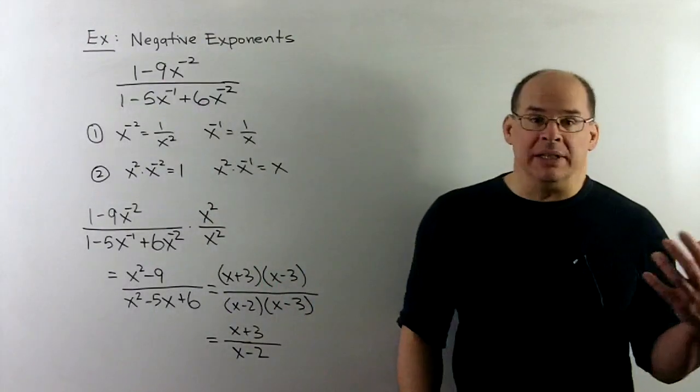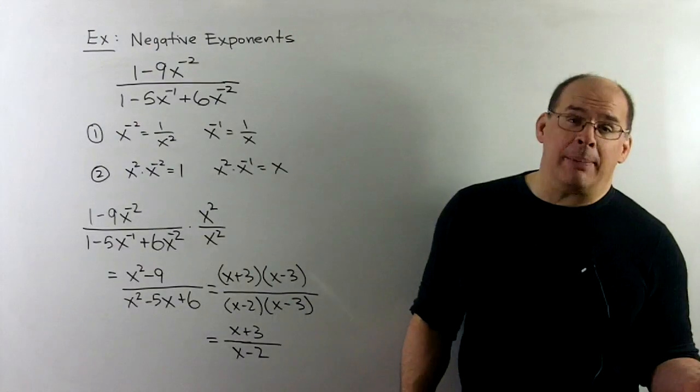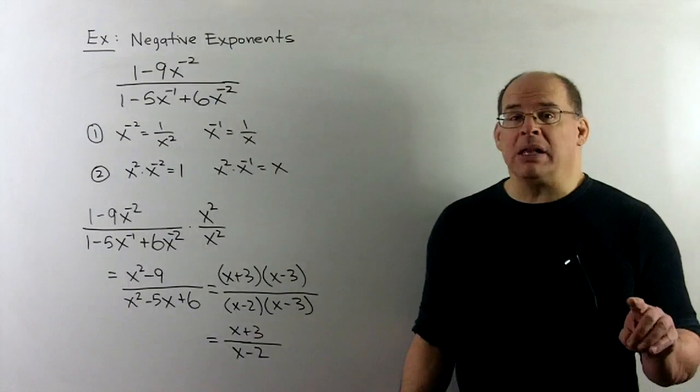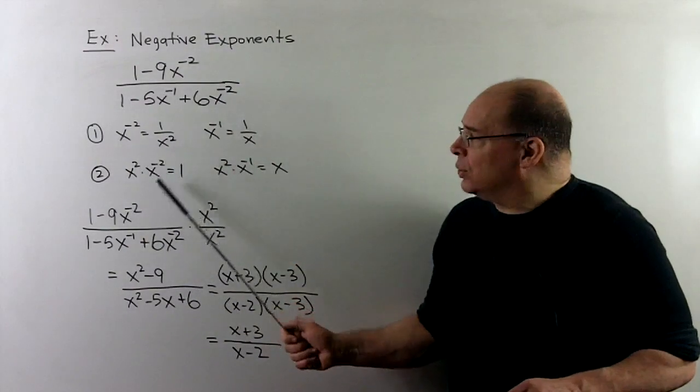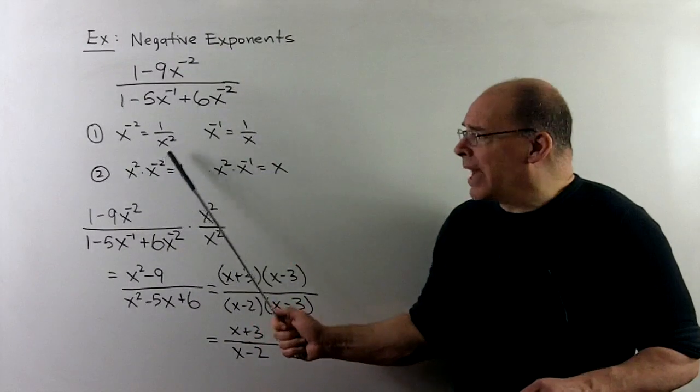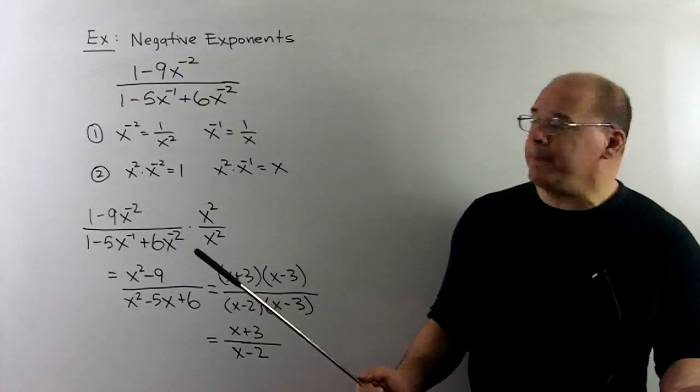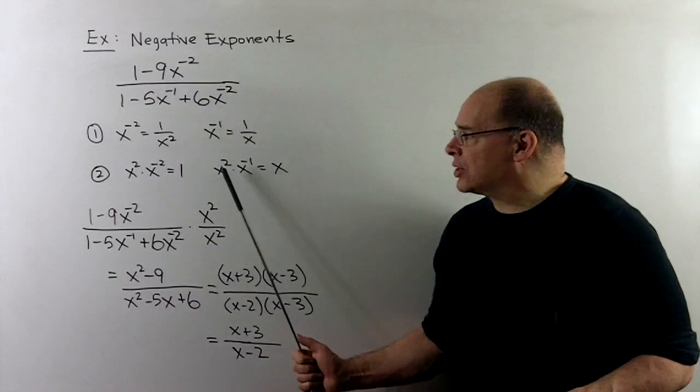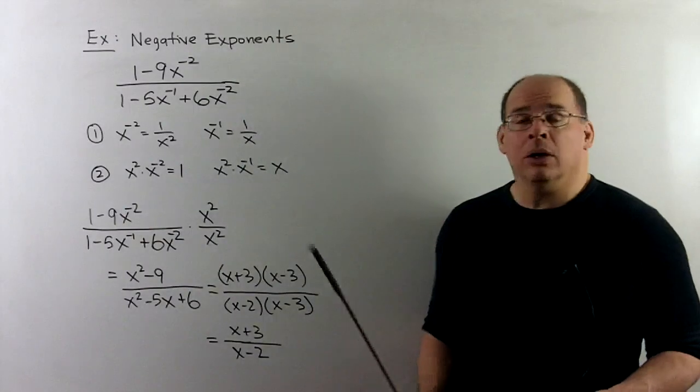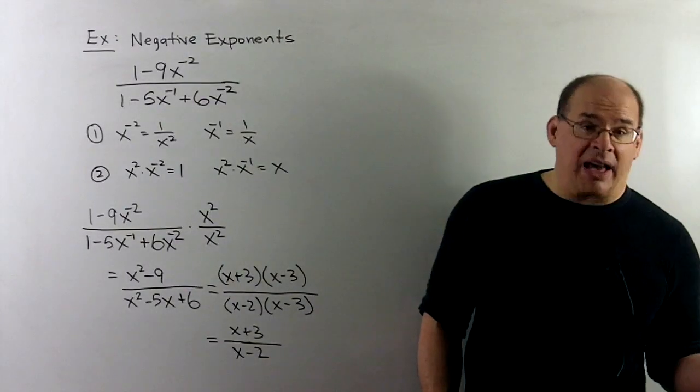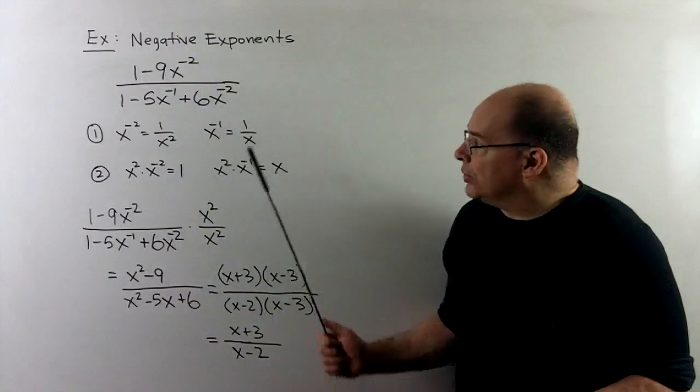If we rewrite, we could deal with it as with the previous examples, but there's a little bit cleaner way. So what we'll note is if we multiply x to the minus 2 by x squared, we sum the exponents, x to the 0 is 1. And if I multiply x squared by x to the minus 1, the exponent now is 1, x to the 1 is just x.